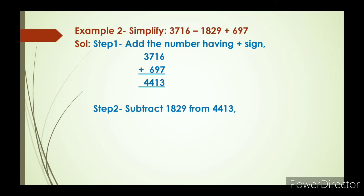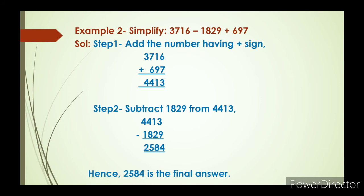Now Step 2: here only 3 numbers are given, so after adding the positive sign numbers we subtract 1829 from the sum 4413. After subtraction we get 2584. Hence 2584 is the final answer.